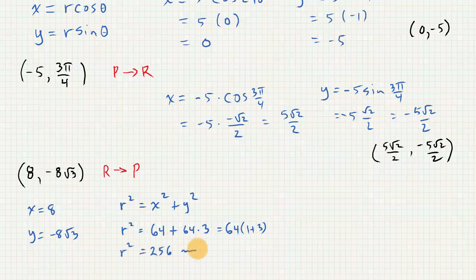And then we have to get r from that, so we take the square root of 256. And if we take the square root of 256, we get 16.